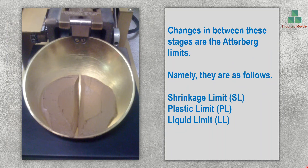Changes between these stages are called Atterberg Limits. That is, soil changing from liquid to plastic, plastic to semi-solid, and semi-solid to solid are called the Atterberg Limits. There are three main limits: Shrinkage Limit (SL), Plastic Limit (PL), and Liquid Limit (LL).